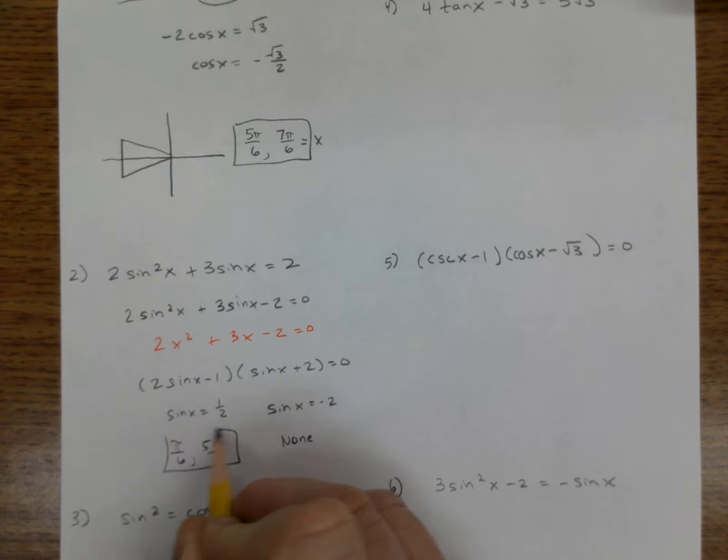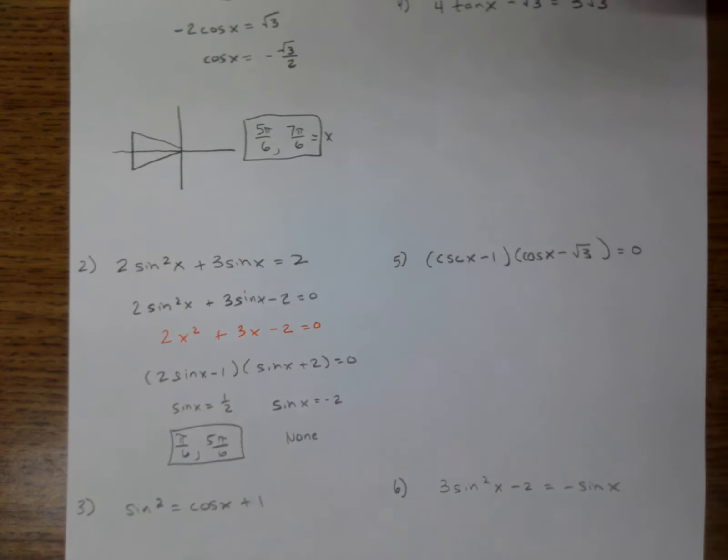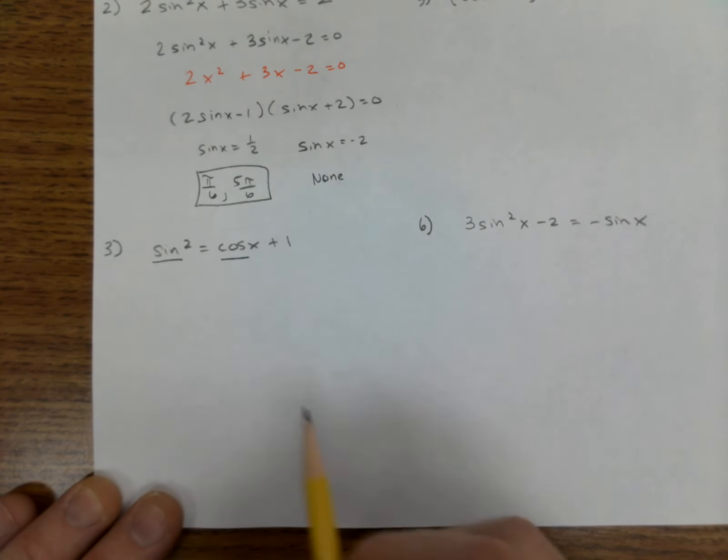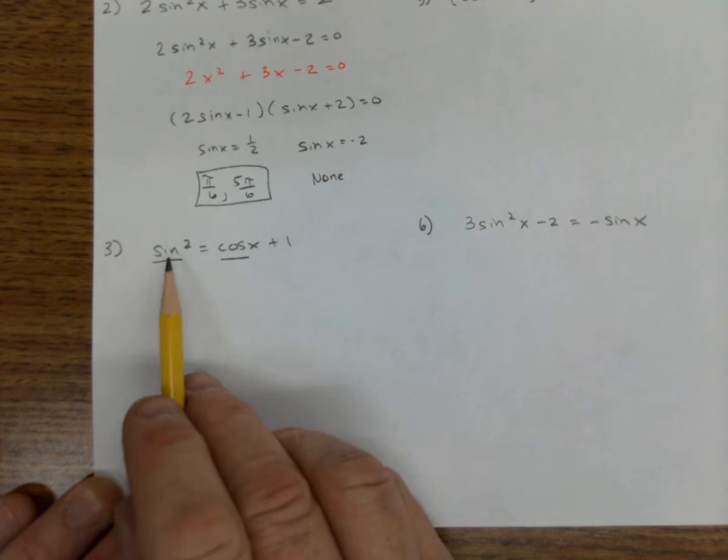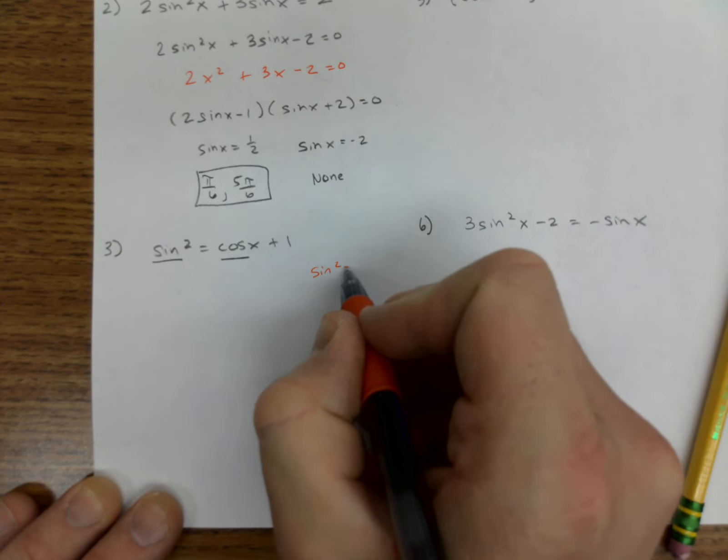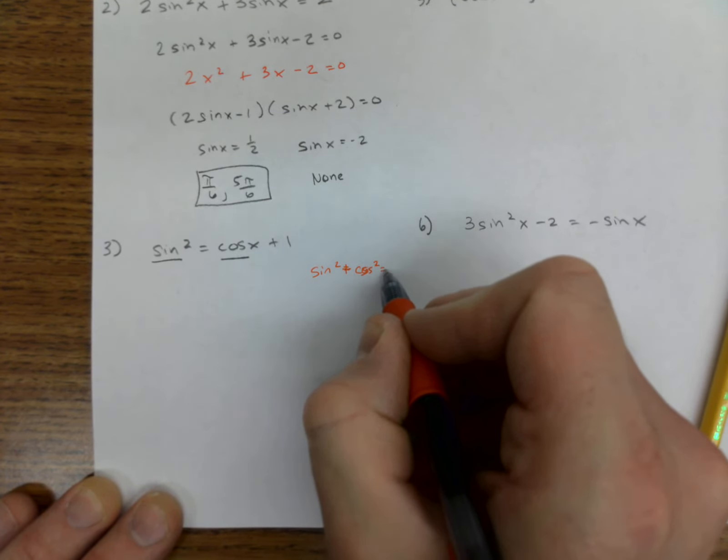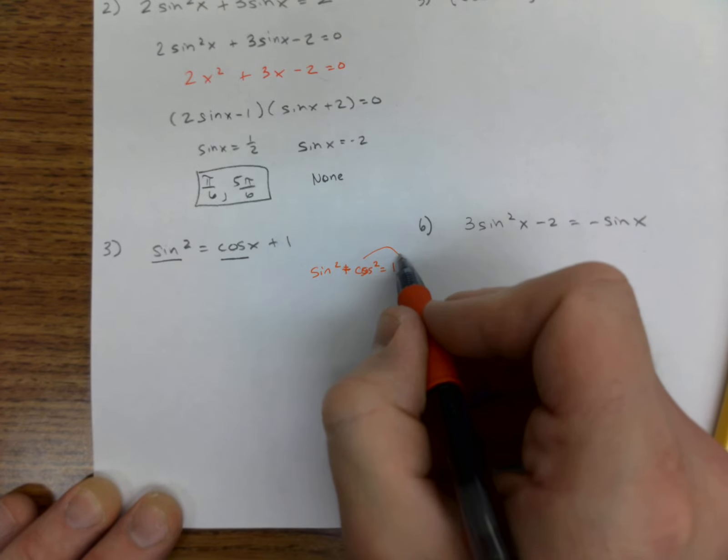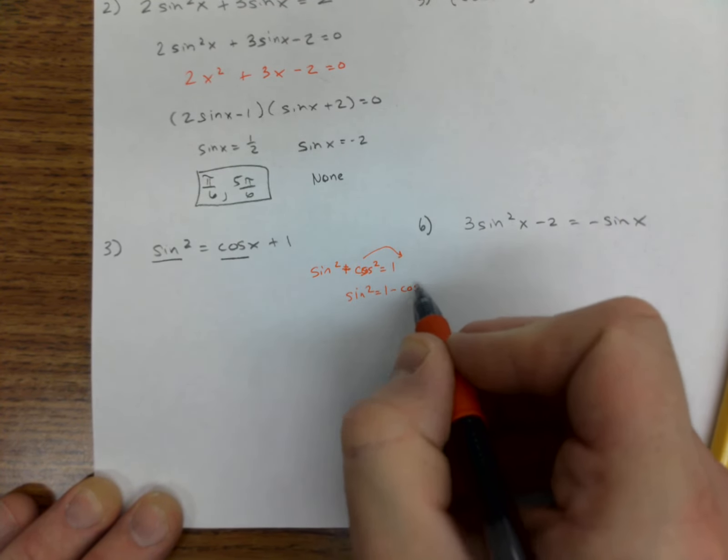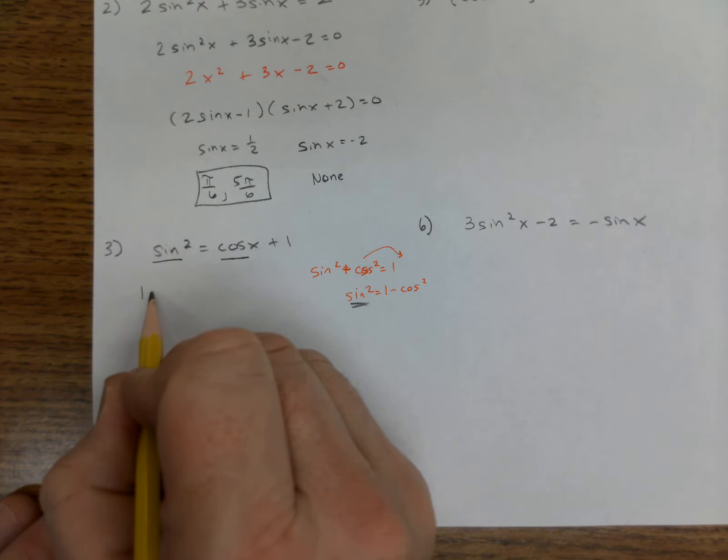All right, going further, number three. Two different trig functions, and I can use the Pythagorean identity on this one, knowing that sine squared is equal to... well, let's do sine squared plus cosine squared is equal to one. If I move this over here, sine squared is now 1 - cosine squared, so I'm going to use this identity right here to put in this place.